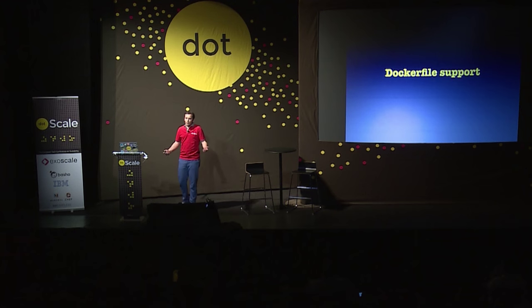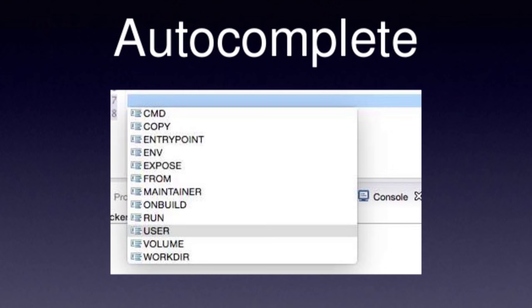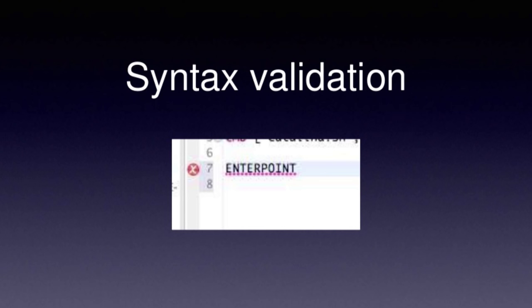Starting with basic Dockerfile support — what do we want? We want syntax highlighting, that's the first basic thing. Going further, we want autocomplete: if you hit control-space, you want a popup with Dockerfile instructions that you can choose. Even further, you want syntax validation so that if you have an error in your Dockerfile, your IDE tells you before you issue your Docker build command.